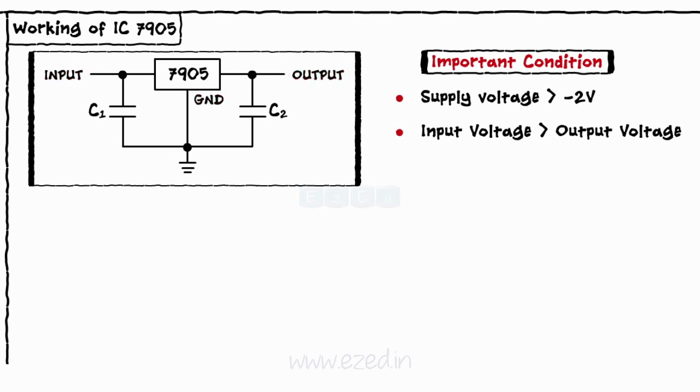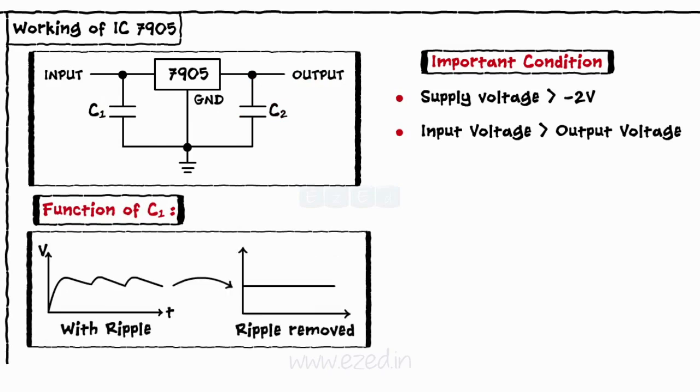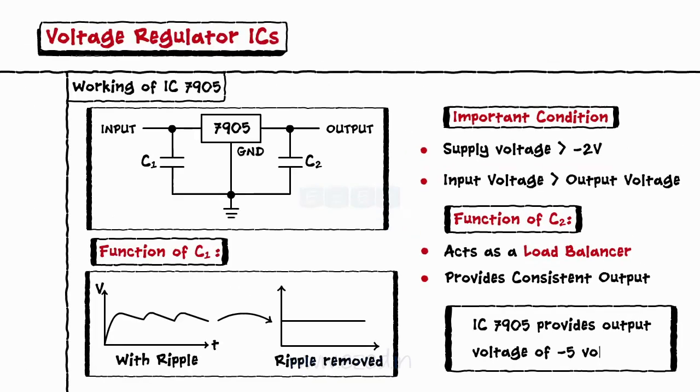Two capacitors are connected as C1 between input and ground and C2 between output and ground. C1 takes out any ripple from the signal and supplies a constant signal to the IC, and C2 acts as a load balancer to ensure a consistent output. Thus, IC7905 will provide output voltage of minus 5 volts.